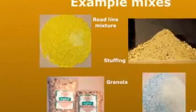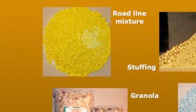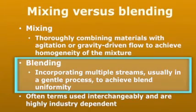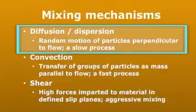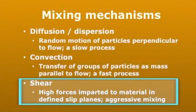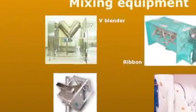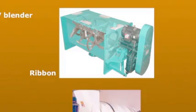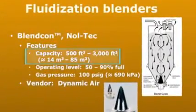Batch mixing processes are described for common industrial applications. The differences between mixing and blending are presented, including the three basic mechanisms of mixing. After discussion of batch mixing fundamentals, Eric then reviews specific batch mixing equipment, such as V-blenders, ribbon paddle mixers, and fluidization blenders.